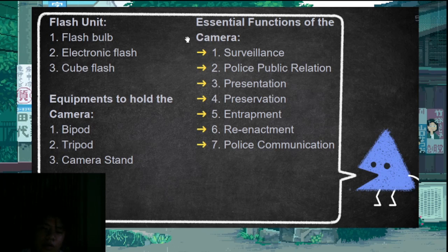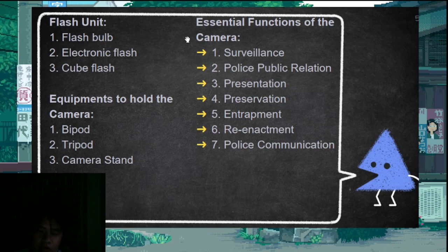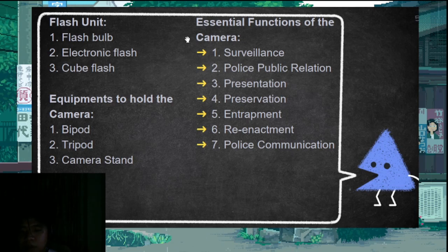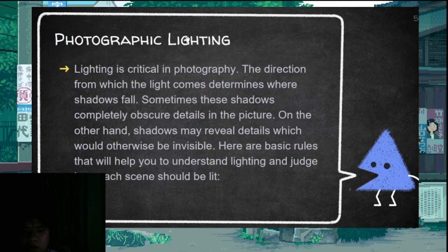Other parts of the camera include the flash unit, flash bulb, electronic flash, and cube flash. Equipment includes the tripod — which has three legs — as well as the bipod with two legs, and the camera stand. The essential functions of the camera in police work are for surveillance, public relations, presentation, preservation of evidence, entrapment, re-enactment, and police communication.